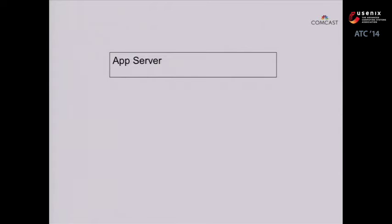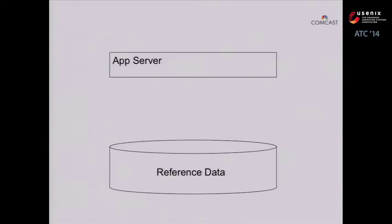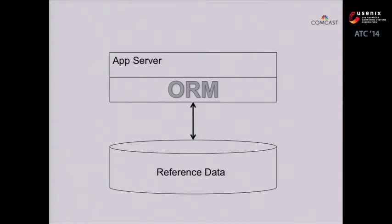This led us to think about maybe there's a different application architecture we can be using for accessing this reference data set. The traditional architecture is that I have my application server with my business logic, and I've placed my reference data off in some external data store. My application then issues queries to go fetch the reference data that it needs. A familiar problem here is that there's an impedance mismatch — my application wants to deal with native data structures like objects, sets, maps, and arrays, but the data is actually stored in a different format, maybe in documents in a NoSQL database or in a relational format in a traditional RDBMS. So it's often the case that we add an object relational mapper to try to mitigate that impedance mismatch.